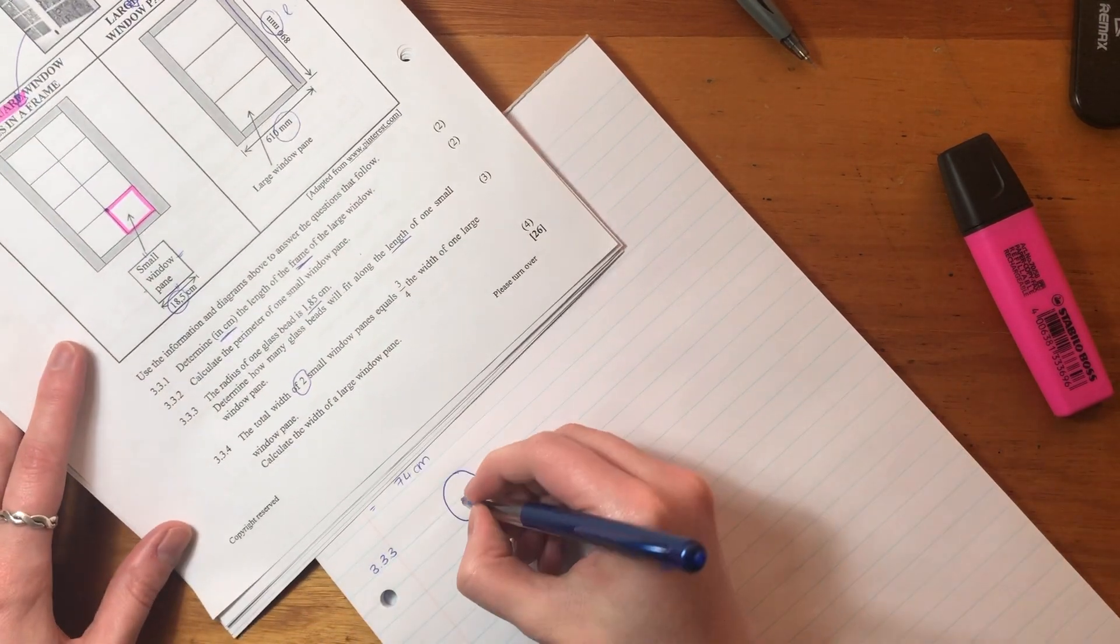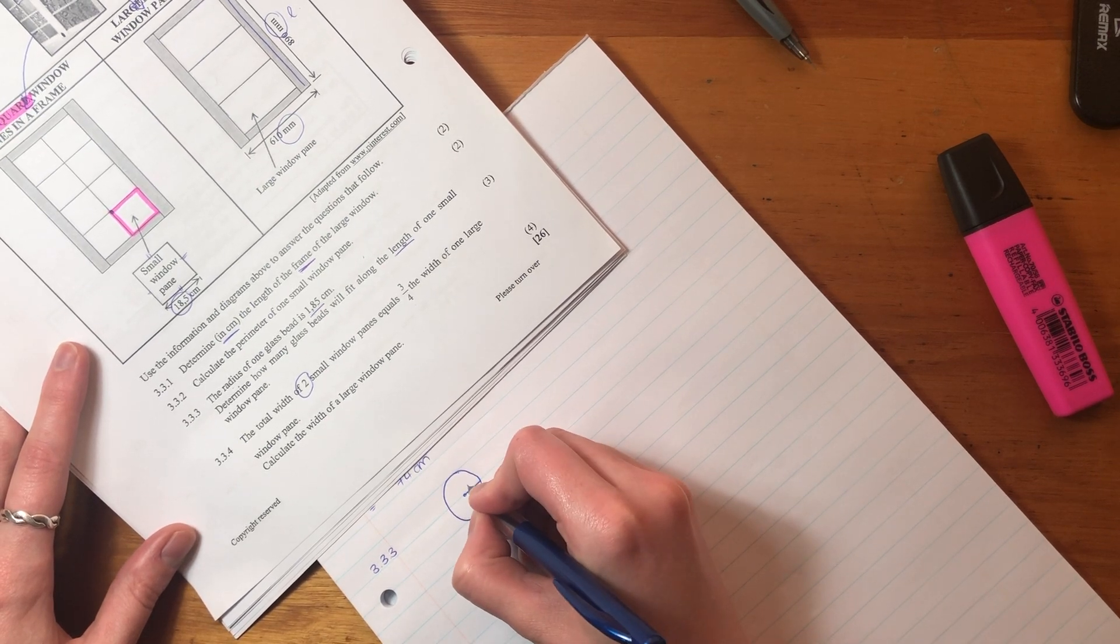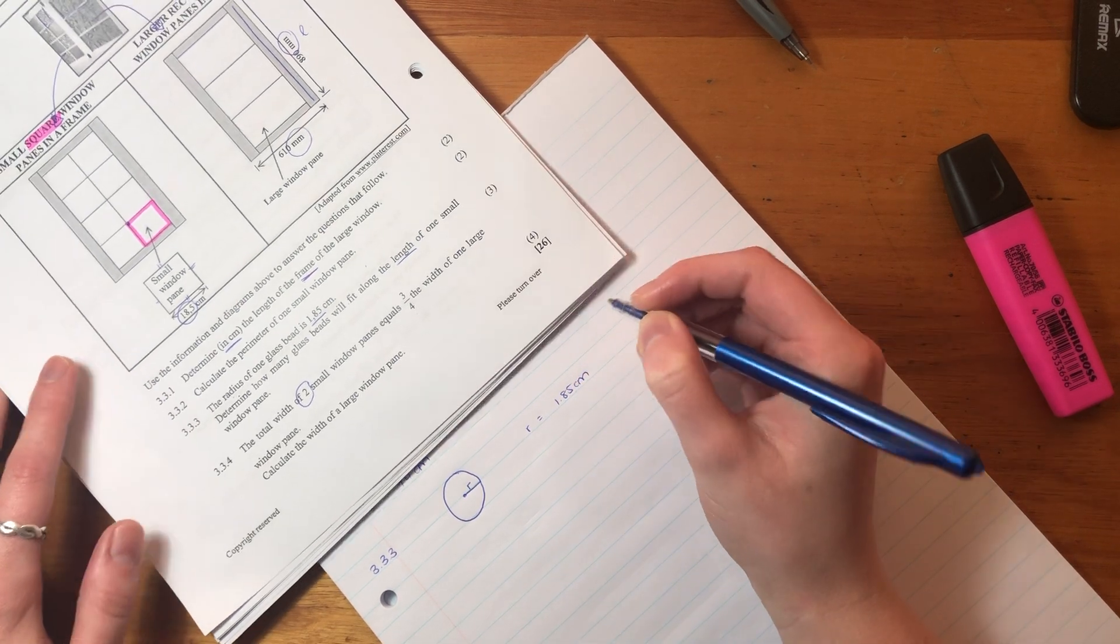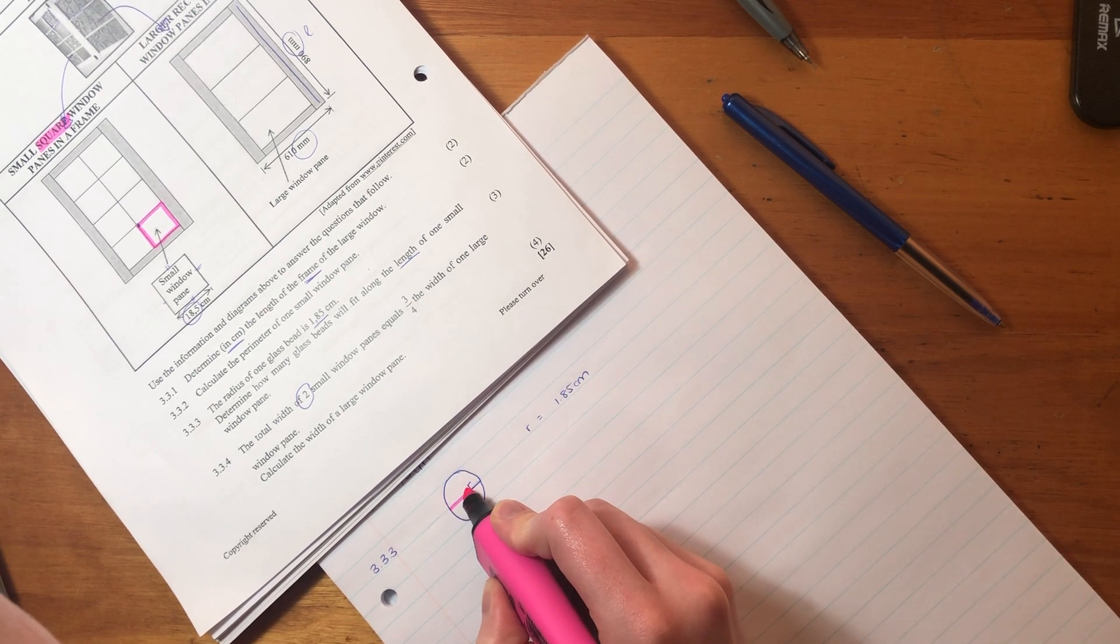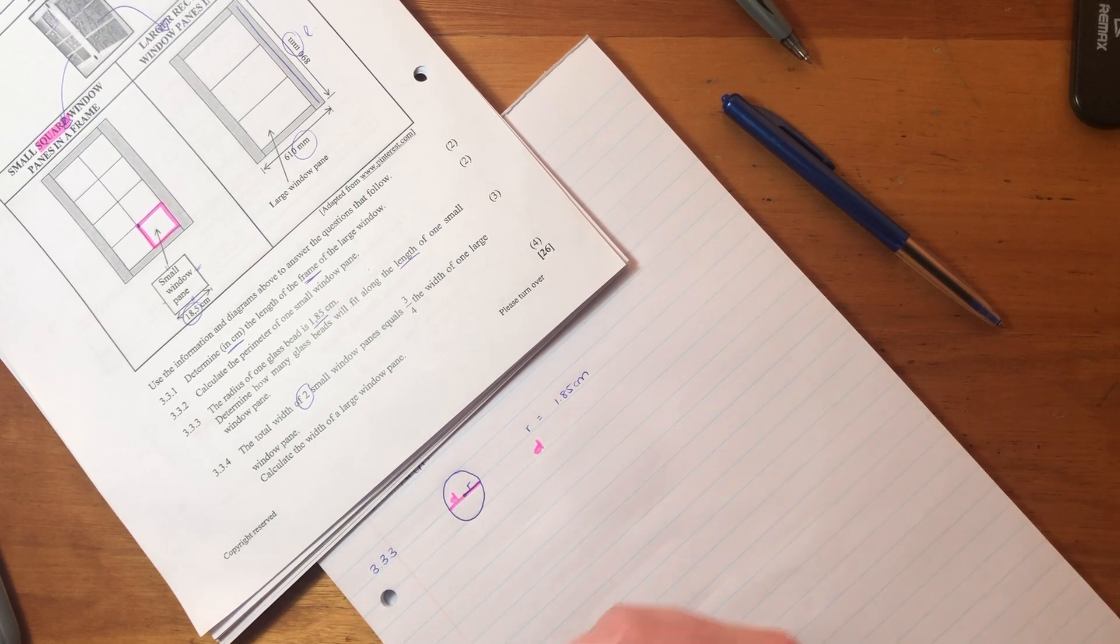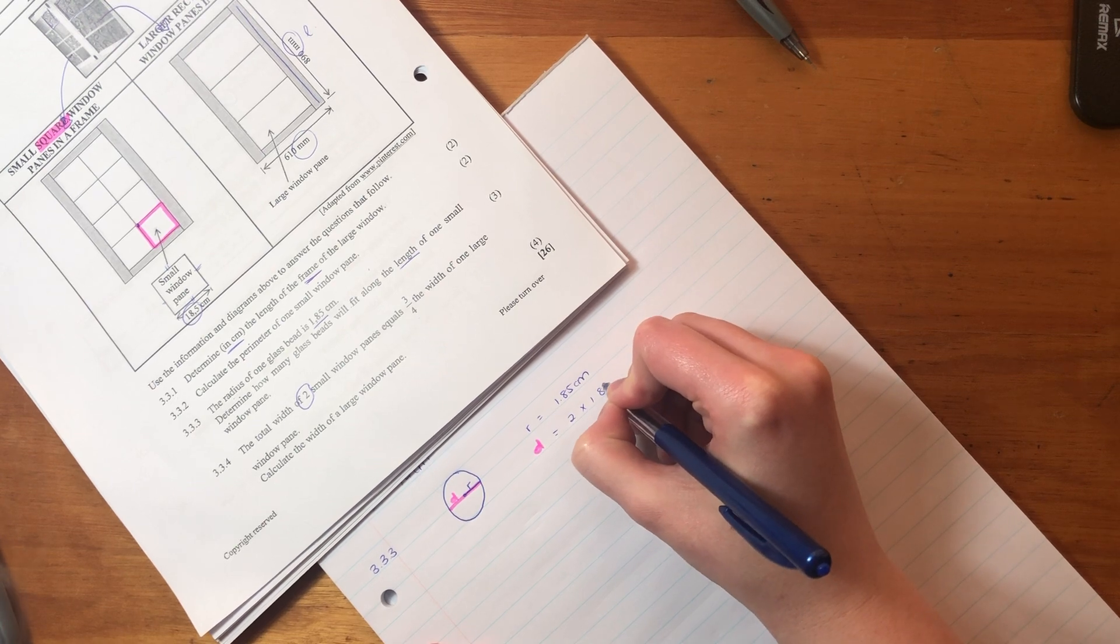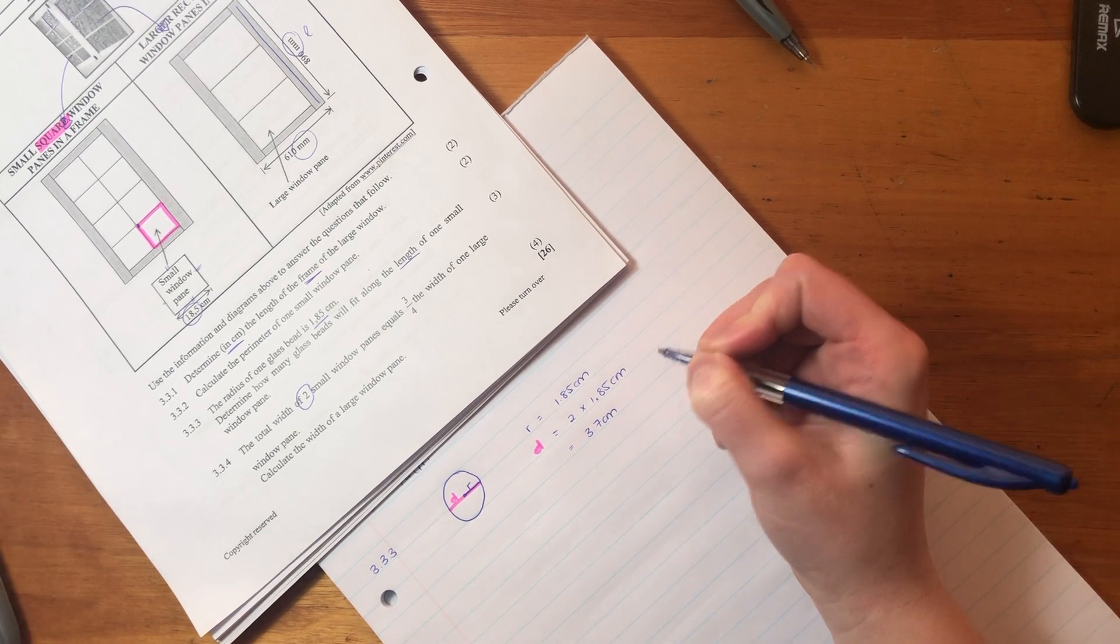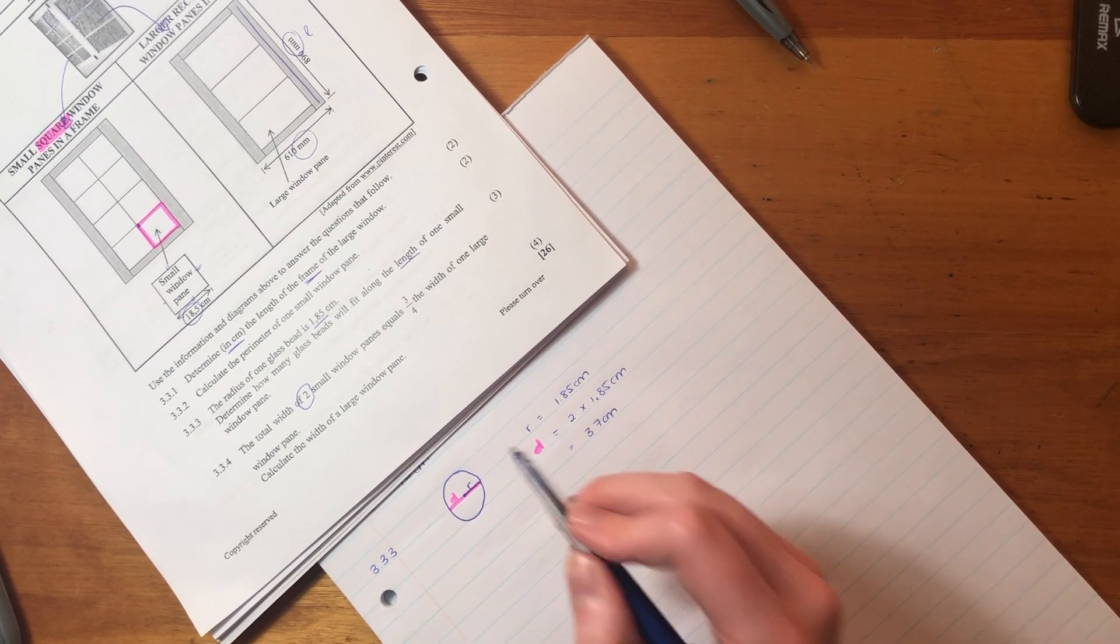So we know that the radius starts from the middle and goes to one side. That's the radius. So radius equals 1.85 centimeters. Now the diameter is a little bit different. Diameter goes the whole way across. So this diameter equals 2 times 1.85 centimeters, which equals 3.7 centimeters, because it runs from one side to the other side.